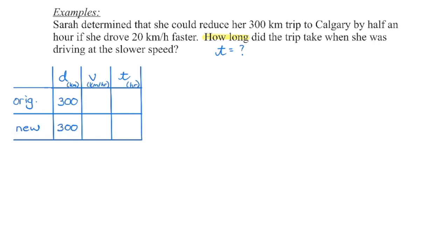In this particular question, we're traveling at an original speed and then changing that speed to get our new speed. The distance of the trip is not changing — whether I go faster or slower, the distance is still going to be 300 kilometers to Calgary. I'm going to pay attention to the units: distance is in kilometers, the speed given is in kilometers per hour, so time has to be in hours.